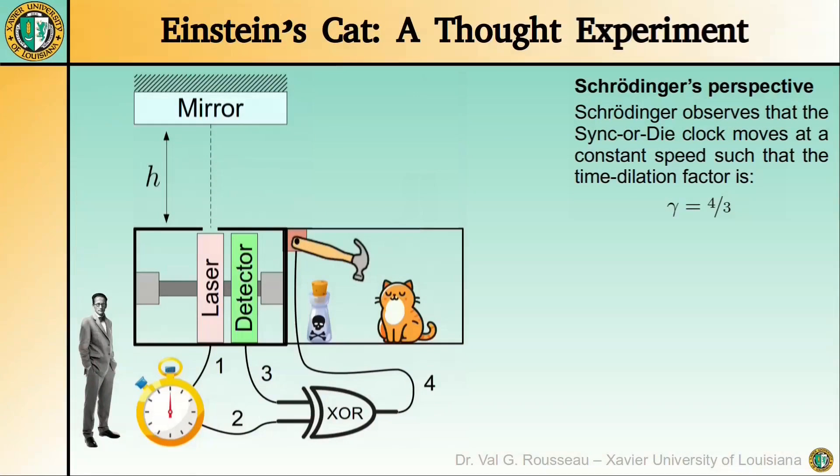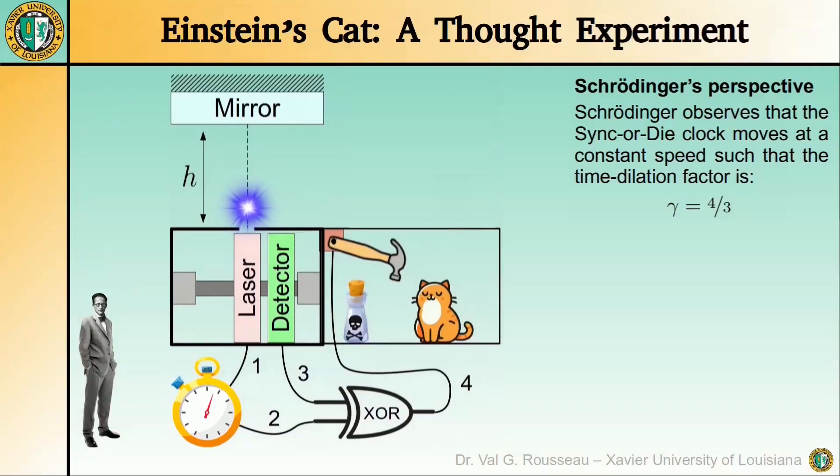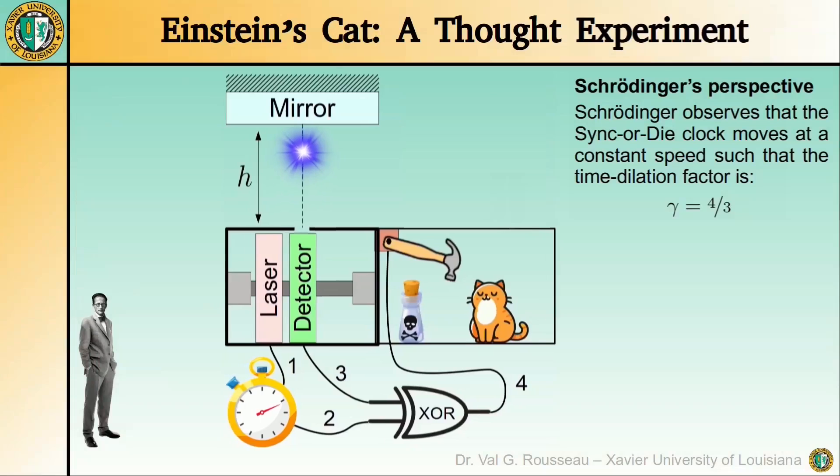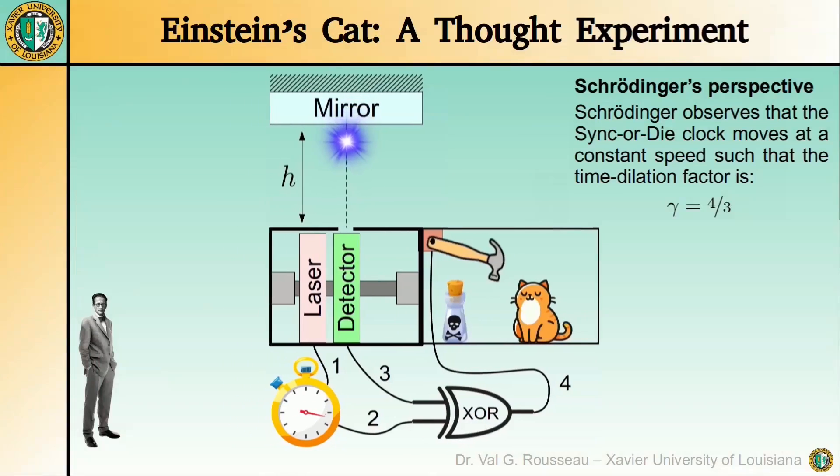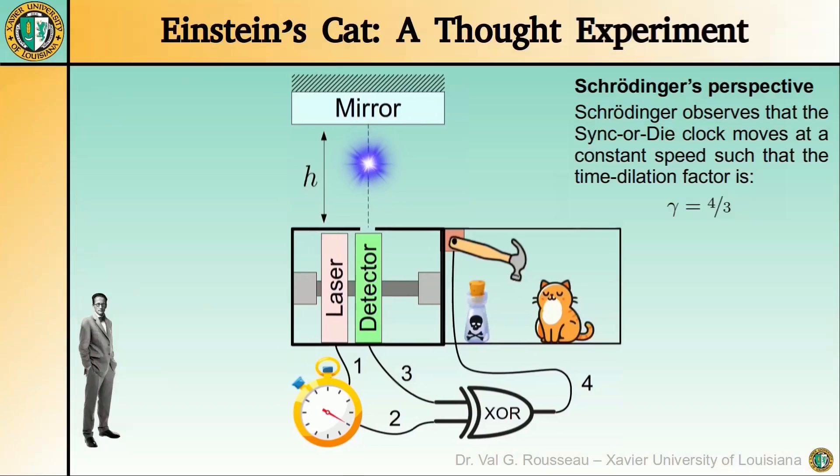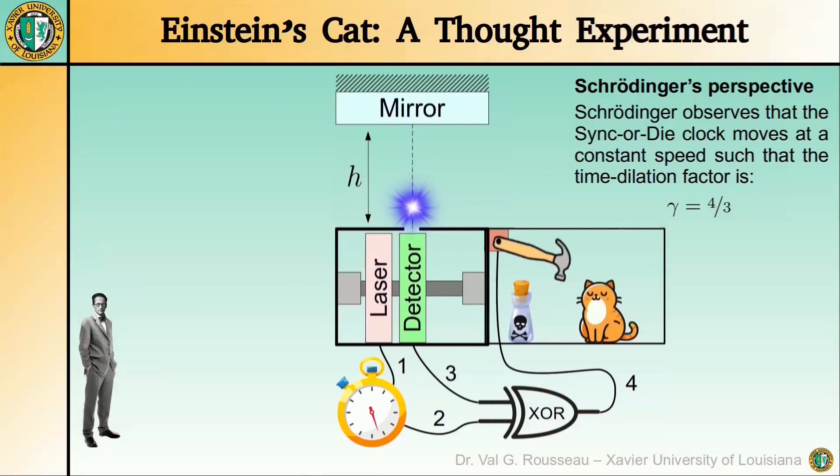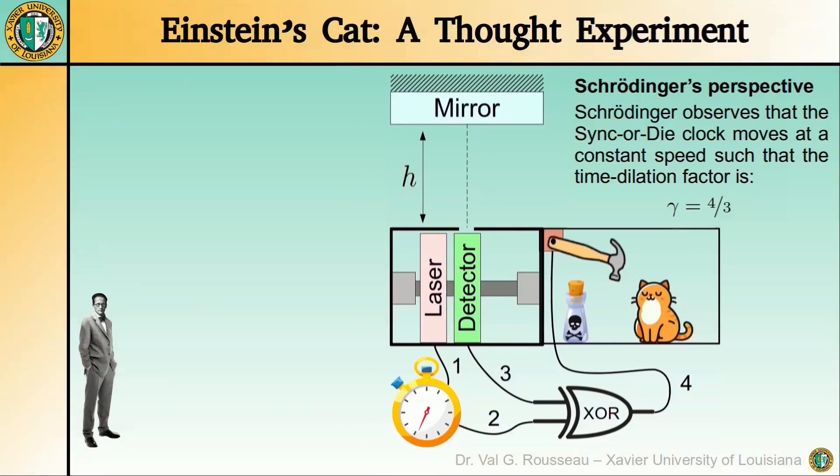Once Schrodinger accounts for the time dilation of the stopwatch, he sees that it actually takes 40 seconds in his frame for it to reach its internal 30-second mark. The stopwatch is running slow, just like the light clock, so the signal is sent exactly when the light pulse returns and the poison is not released. Both observers now agree. Tiger lives.